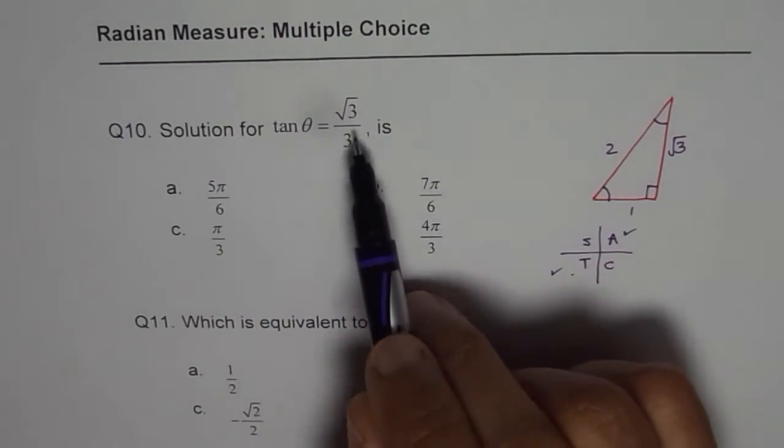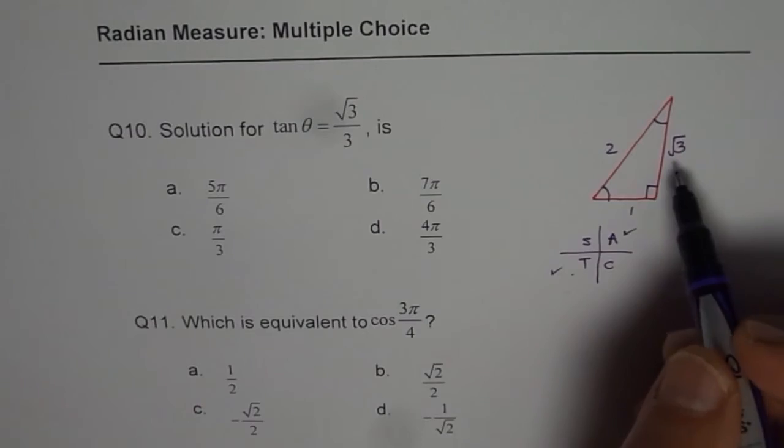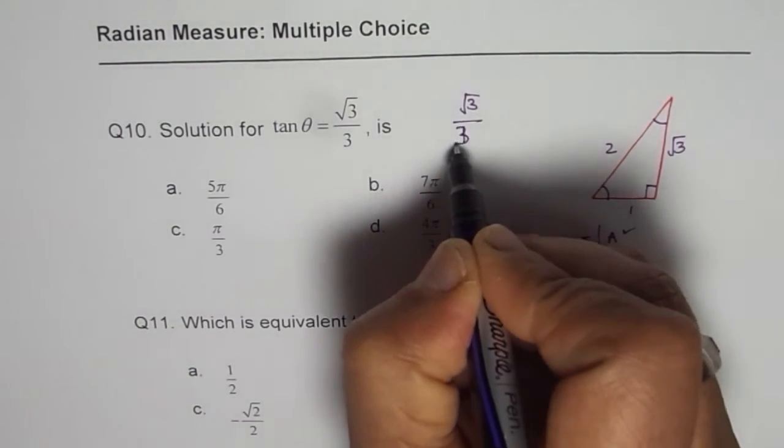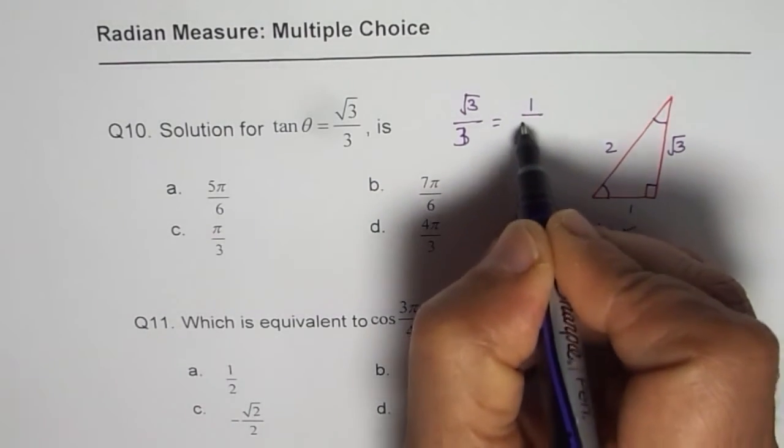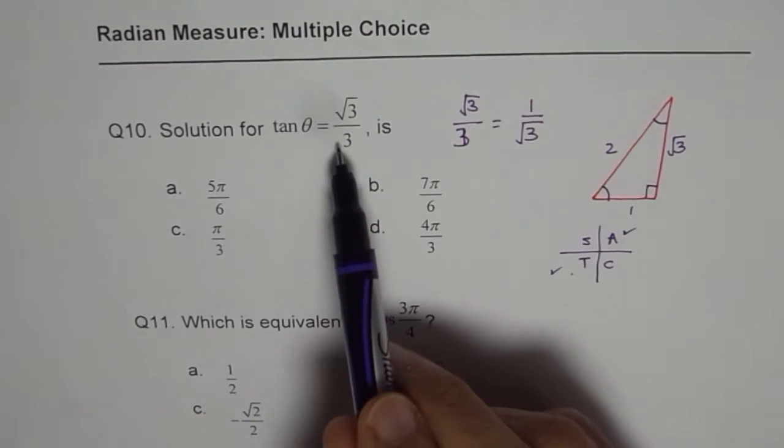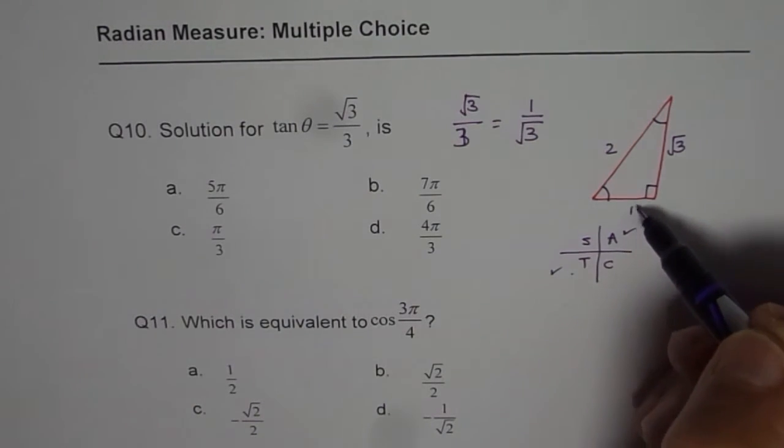When we say tan θ is square root 3 over 3, sometimes students get confused. This could be written as square root 3 over 3, which equals the same as 1 over square root 3. That is the rationalized form of 1 over square root 3.